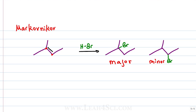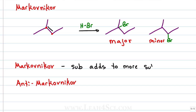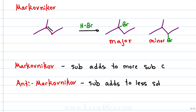This rule can be expanded to all alkene addition reactions. A reaction that follows Markovnikov's rule is one where the substituent adds to the more substituted carbon, specifically of the two carbons that used to form the alkene. A reaction that goes anti-Markovnikov is one where the substituent adds to the less substituted carbon of the two that used to form the alkene.